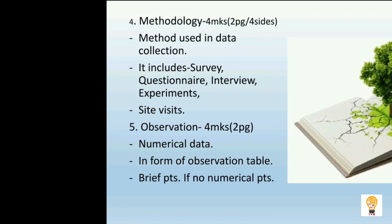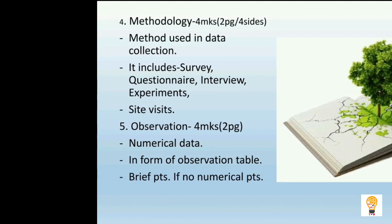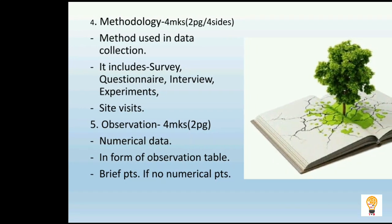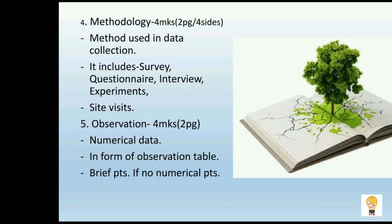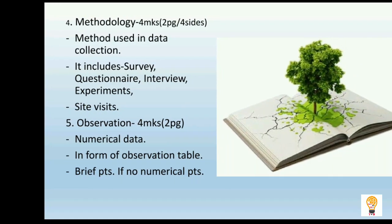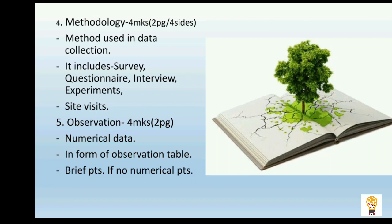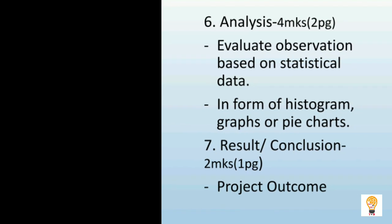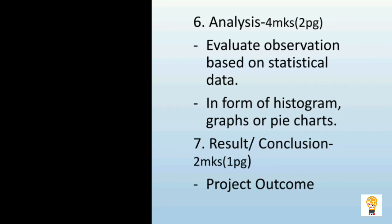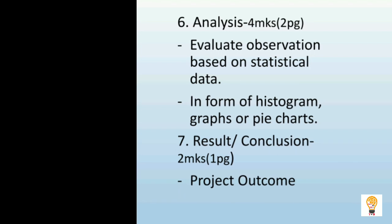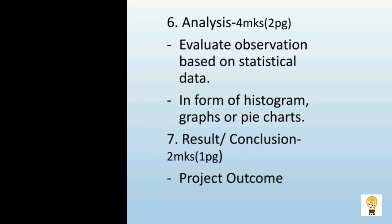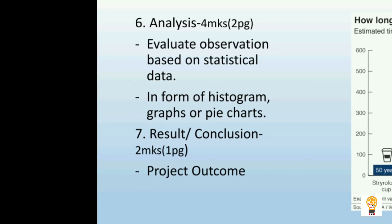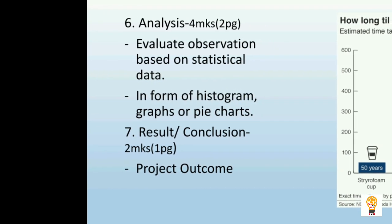The fifth component is observation, which also carries 4 marks and should be written on 2 pages, i.e. 4 sides. It must contain evaluated observations based on statistical data in the form of an observation table, or brief points if no numerical data is available. The sixth component is analysis, which again carries 4 marks and should be written on 2 pages. It must contain observations evaluated based on statistical data, or in the form of histograms, graphs, or pie charts.